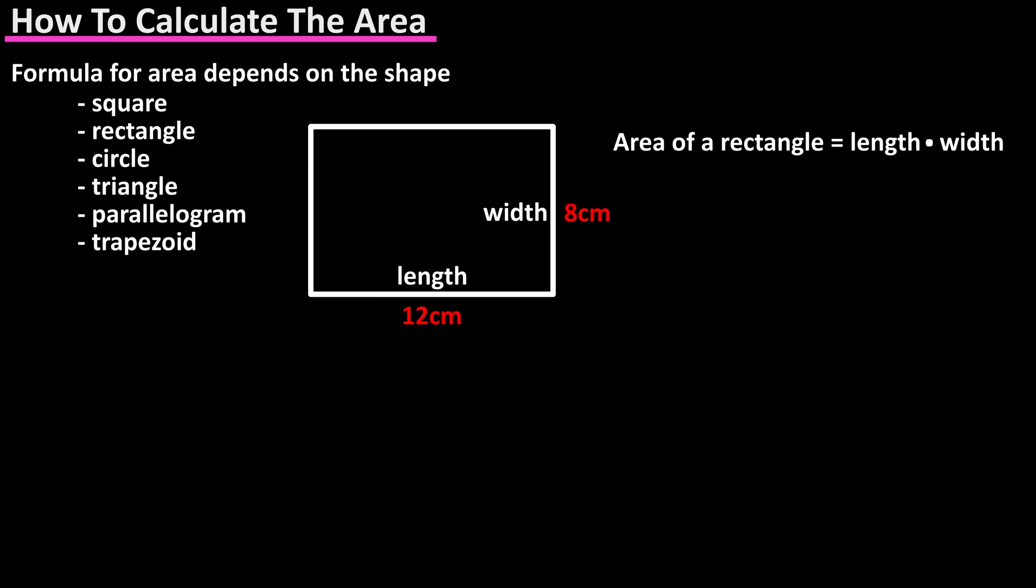The formula for calculating the area of a rectangle is length times width. So in this example that would be 12 centimeters times eight centimeters, which equals 96 centimeters squared.